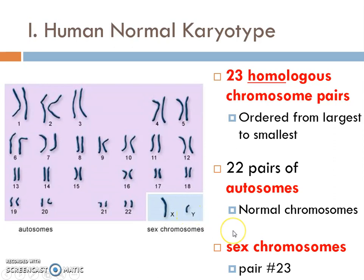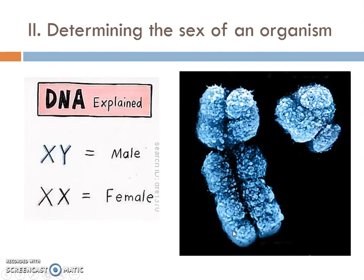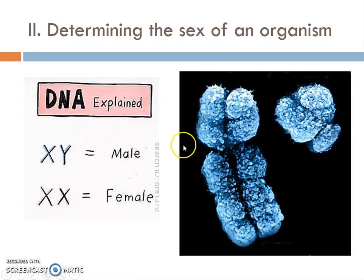When thinking about what X and Y mean for determining the sex of an organism, we're referring to biological sex. The combination of one X and one Y leads to biological male; the combination of X and X leads to biological female. The X chromosome is much bigger than the Y chromosome — Y is very tiny — and as long as you have a Y chromosome, you're going to be biological male.